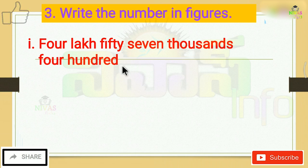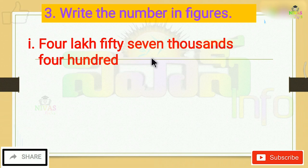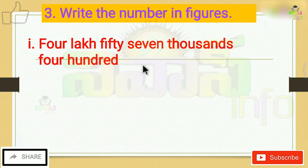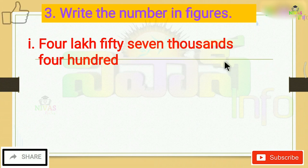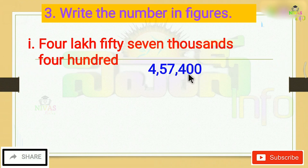The next question: 4,57,400. Breaking it down: 4 is in the lakhs place, 57 is in the thousands group — fifty-seven thousand, and 400 is four hundred. When a digit is zero, you do not say that place value. You can use zero to represent an empty place value.